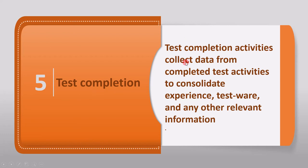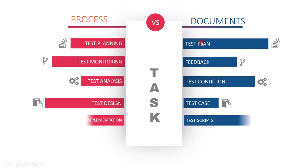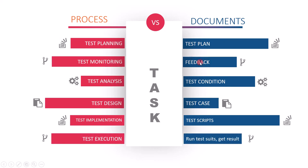The last activity of the test process is test completion. Test completion activities collect data from completed test activities to consolidate experience, testware, and any other relevant information. This is the activity where we collect all outputs from the previous activities. In test planning the output is the test plan; in test monitoring the output is feedbacks; in test analysis the output is test conditions; in test design the output is high-level test cases; in test implementation the output is test scripts or low-level test cases; and in test execution the output is the test result. During test completion all this information is collected and stored.